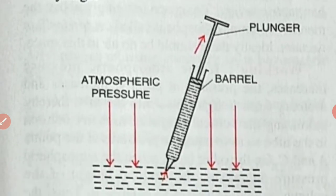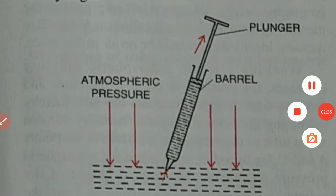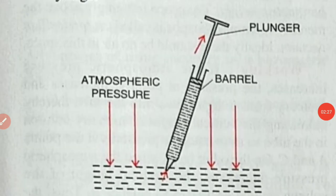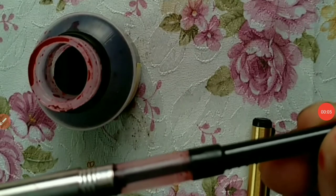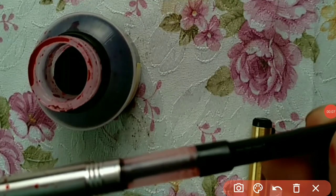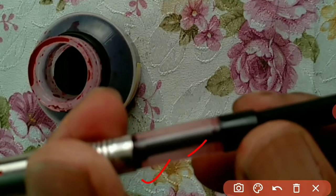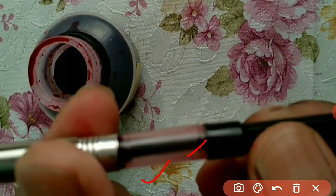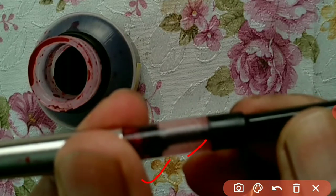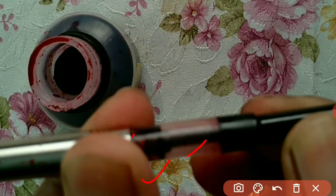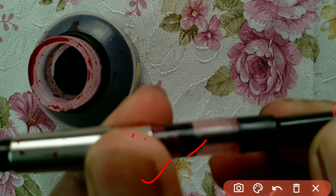Instead of a syringe, a pen with a barrel and plunger is used as a demonstration. As the plunger moves out — as you can see when the thumb pulls the plunger — you can see pressure dropping at that portion inside the barrel.